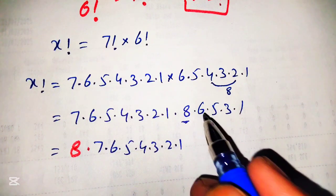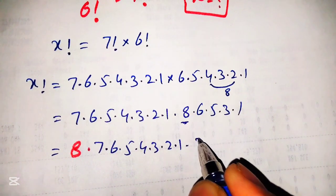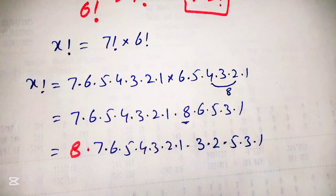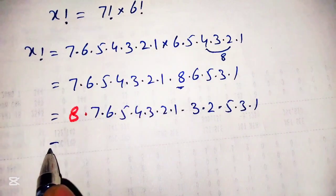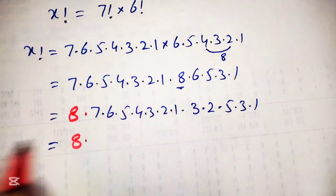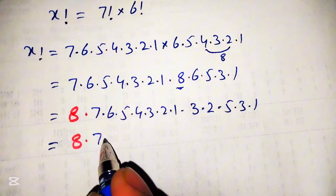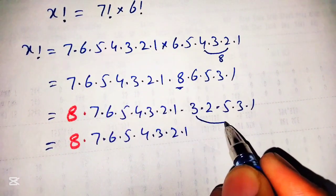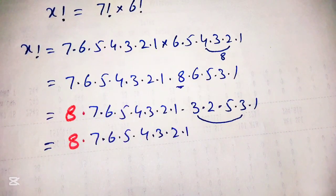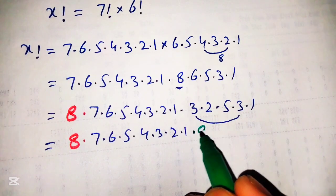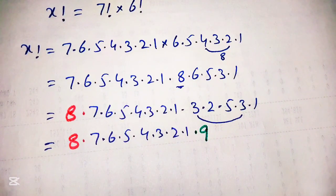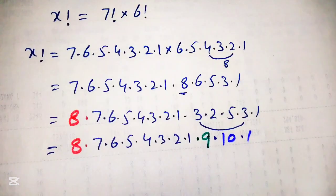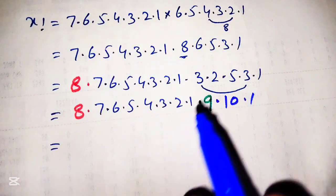From this we can break the 6 as 6 equals 3 multiplied by 2, giving us 6 into 5 into 3 into 1. Now we can write it as 8 into 7 into 6 into 5 into 4 into 3 into 2 into 1, and 3 multiplied by 3 is equal to 9, and 2 multiplied by 5 is equal to 10.